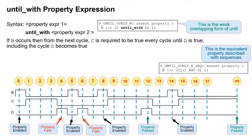B is true here and C stays true up to the cycle before D occurs — but remember, it's an overlapping form, therefore that's a failure. C has to be true at cycle four as well; if that's the first time D occurs, C must be true as well. If B occurs and the very next cycle D becomes true, that does not satisfy the property, because a minimum of one occurrence of C is required. If C had been true on cycle six that would have passed, but it wasn't — therefore it fails. Here B occurs and C is true up to and including the cycle where D occurs, so cycle 12 is a pass. And here B is true, C stays high to infinity and D does not occur — remember this is a weak form, so in formal and simulation that's a pass. There is no obligation for D to occur.